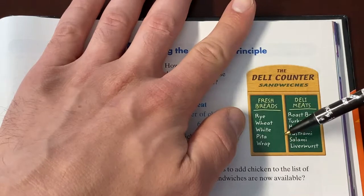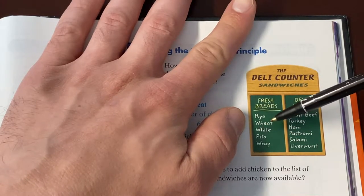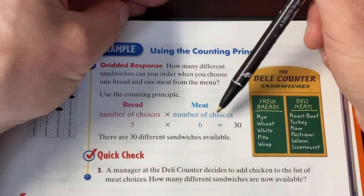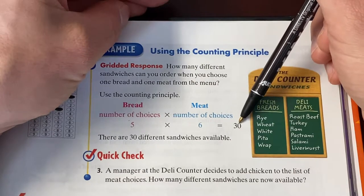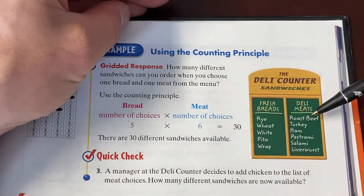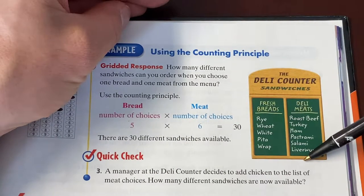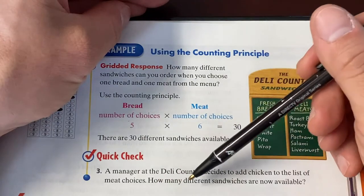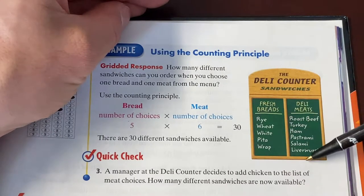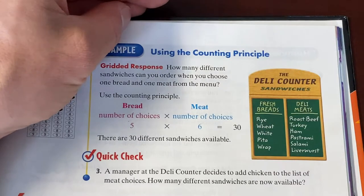So how many sandwiches can we make if we choose one bread and one meat? Well, you would do five times six. Five bread choices, six meat choices. There are 30 possible sandwiches. What if the manager adds chicken to the list of meats? So now instead of these six meats, we've now got seven meats if we add chicken. How many different sandwiches are now available? Still the same five bread. Seven meats, five times seven. And now we have 35 sandwiches available.